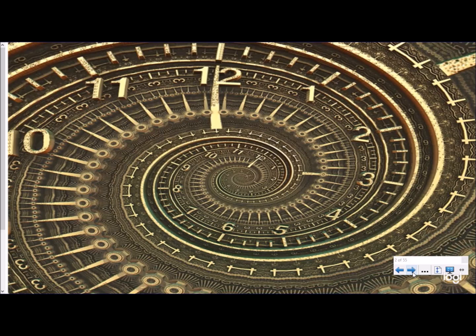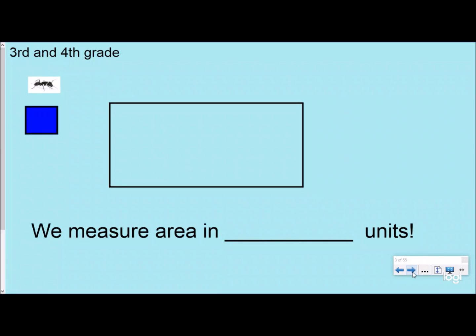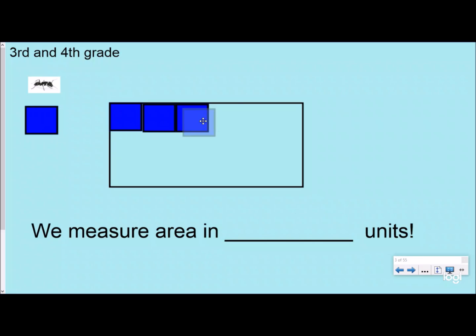The first thing we talk about is going back in time to fourth grade. We discuss how in third and fourth grade we do perimeter and area, really diving into area in fourth grade for Common Core and North Carolina standards. We talk about how when doing area we're measuring in square units — you'd write down 'square units' — and we talk about how we're trying to figure out the space inside a 2D shape.